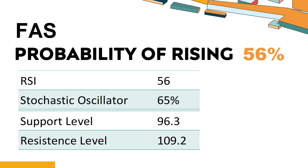Is FAS overbought or oversold according to technical data? FAS's 14-Day Relative Strength Index (RSI) value was 56. When the RSI is between 50 and 70, it generally indicates that the stock is moderately bullish, meaning the securities price has been rising but has not yet reached overbought levels. The current stochastic oscillator of FAS is 65%.